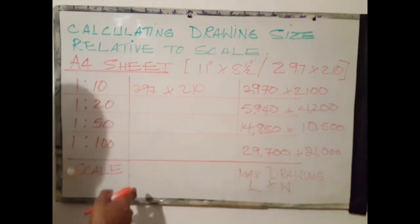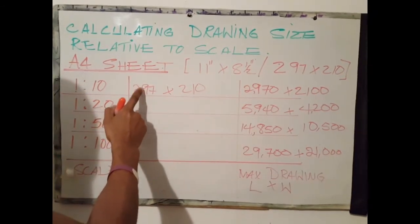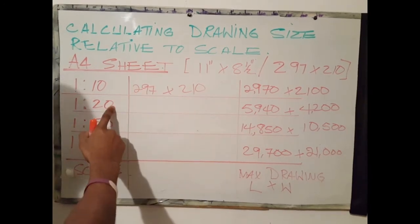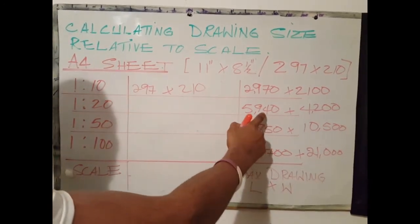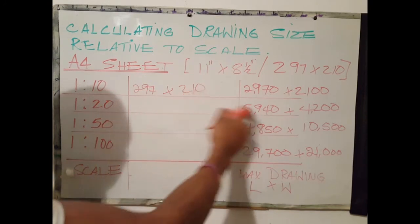In like manner, we multiply the same factor 297 by 20, we get 5920.